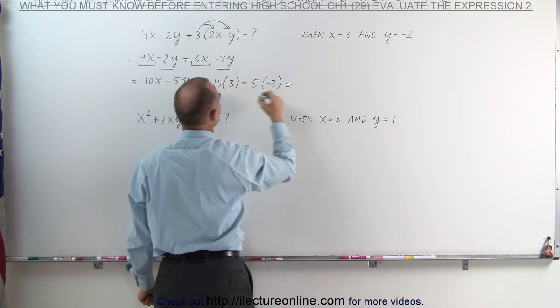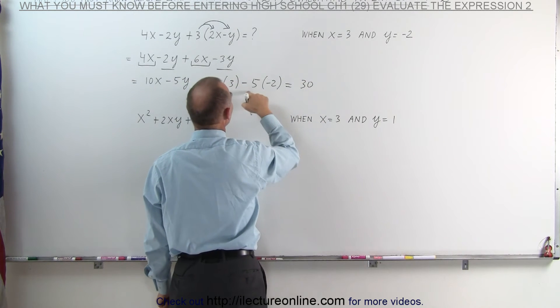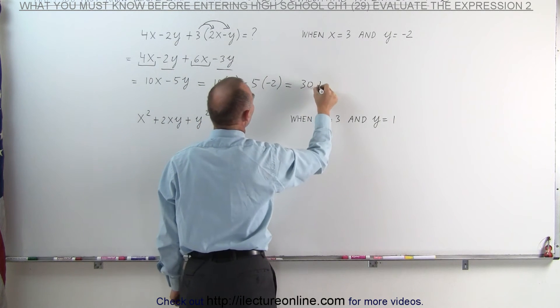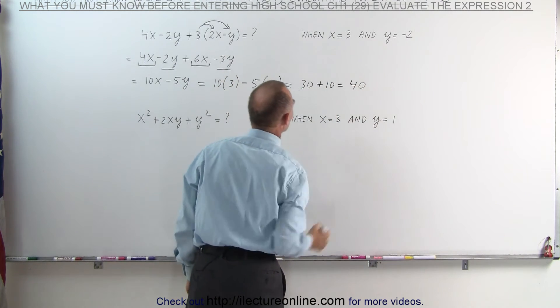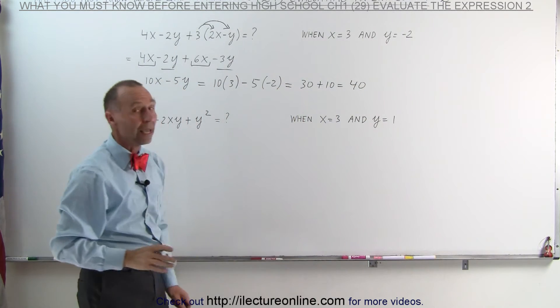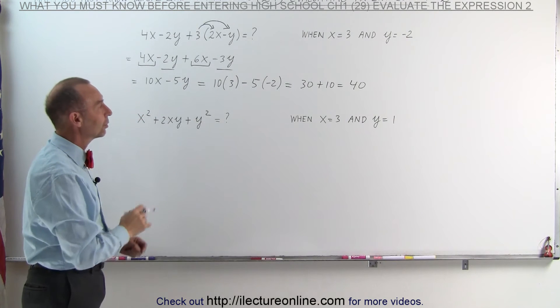This equals 10 times 3, which is 30, and minus 5 times minus 2 is plus 10, which means the expression evaluated when x equals 3 and y equals negative 2 is equal to 40.